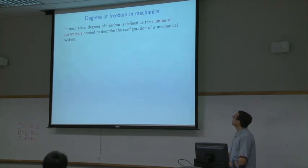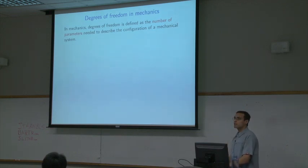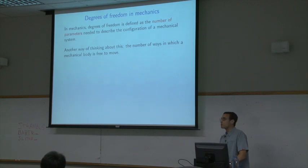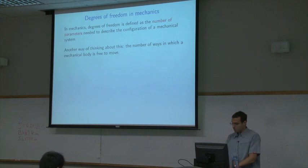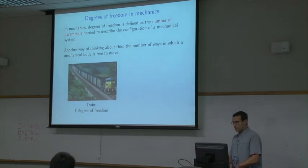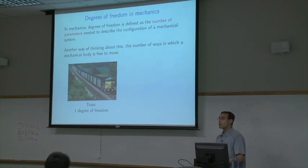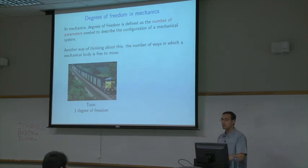So what is it in mechanics? Degrees of freedom is defined as the number of parameters needed to describe the configuration of some mechanical system. You can also think about it as the number of ways in which a mechanical body is free to move. A train on a train track has only one degree of freedom — all it can do is move forwards and backwards. I can define some origin and tell you how far along the track it is.